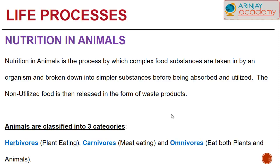Animals can be broadly classified into three categories: herbivores, that are plant-eaters; carnivores, those that eat meat; and omnivores, that eat both plants and animals.